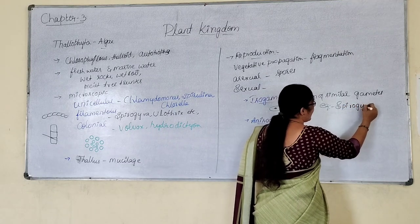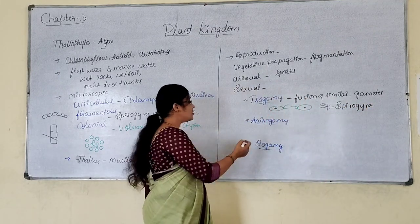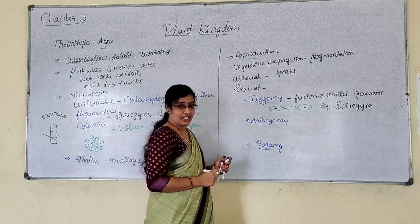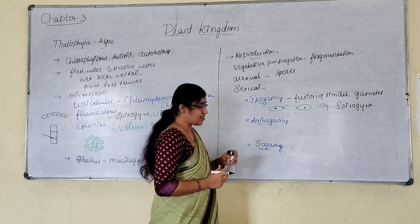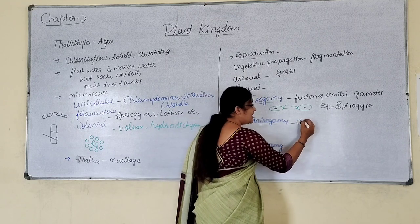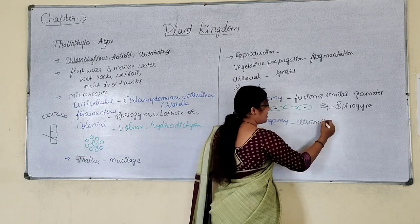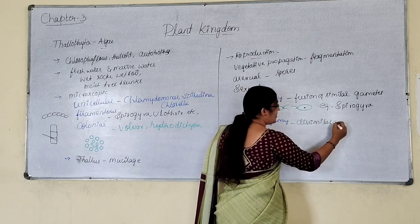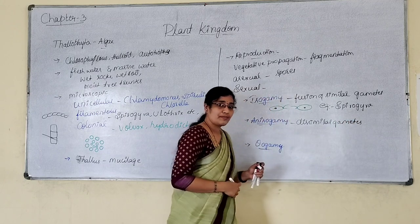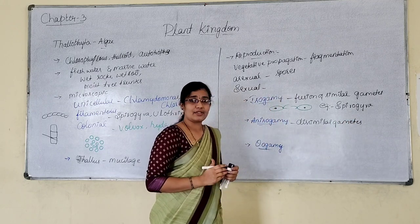Isogamy can be seen in the case of Spirogyra. In anisogamy, the fusion of dissimilar gametes takes place — dissimilar gametes fuse to form the zygote, and that is called anisogamy.